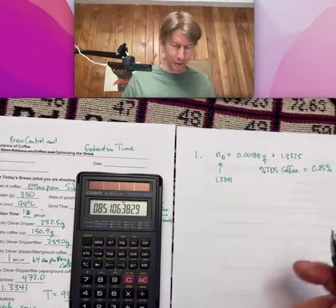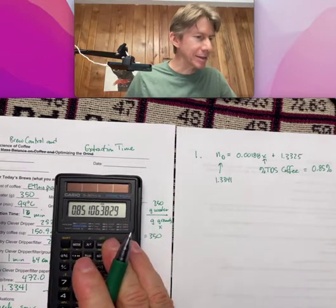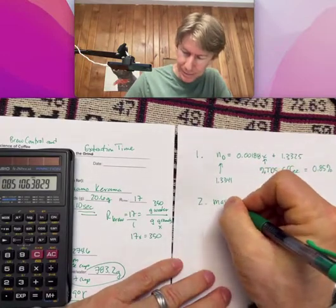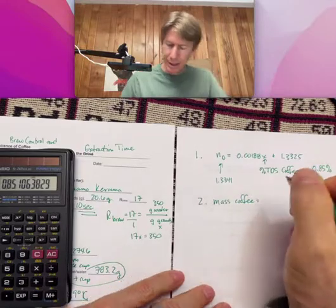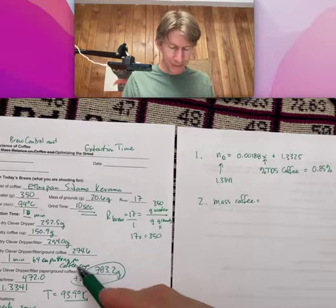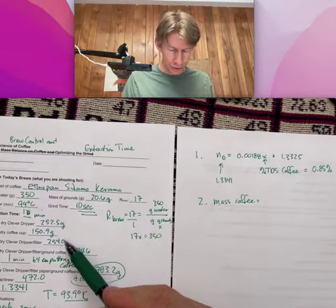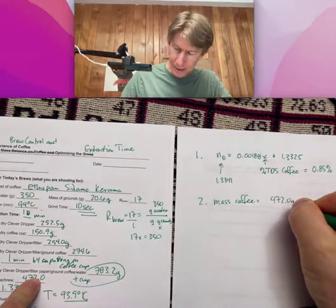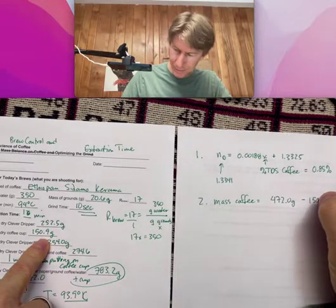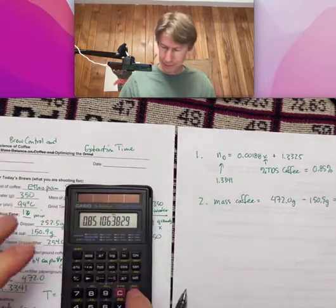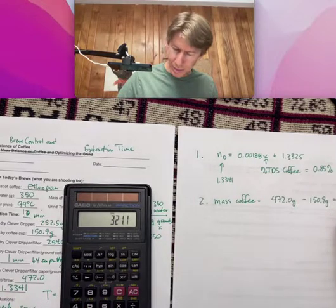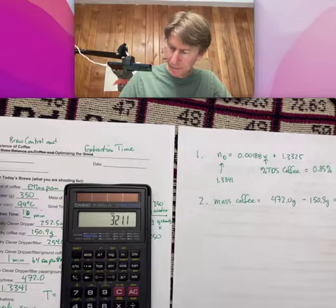Which we might expect - we had a one minute extraction time plus the time for it to get through. Next thing, calculate the mass of the brew, or the mass of the coffee. That's going to equal, I hope I have everything I need here - the mass of coffee cup plus brew minus the mass of the coffee cup, 472 minus 150.9, 321.1 grams of coffee brew.